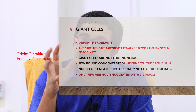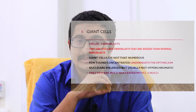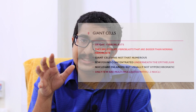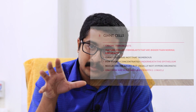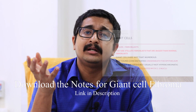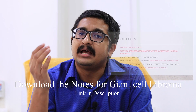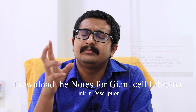Giant cell fibroma is not full of giant cells; it is a lesion wherein only some giant cells are found. They are present but not numerous. They are not found throughout the lesion — they are found closer to the epithelium, perhaps only two to three giant cells. The origin is fibroblasts; they are multinucleated with two to three nuclei in one cell, and note that these nuclei are not hypochromatic.